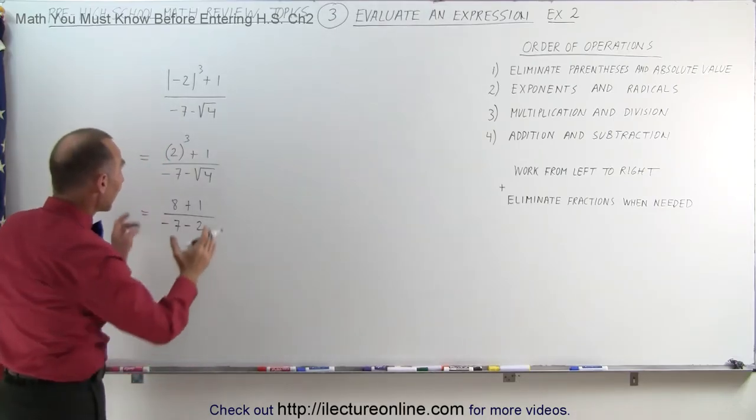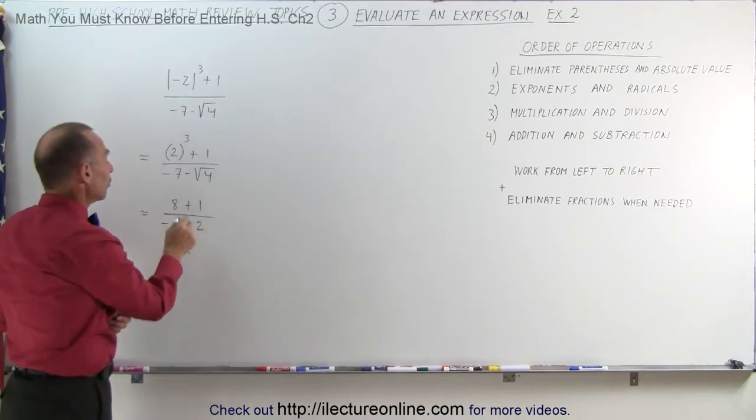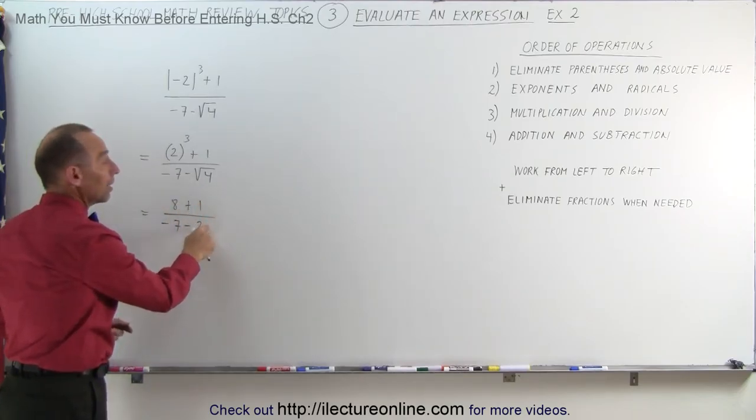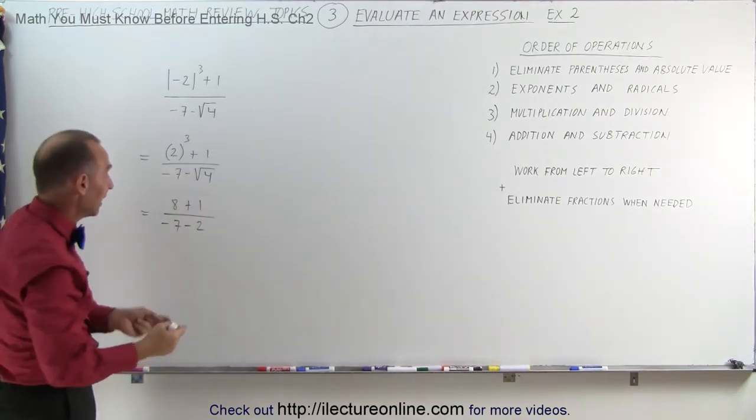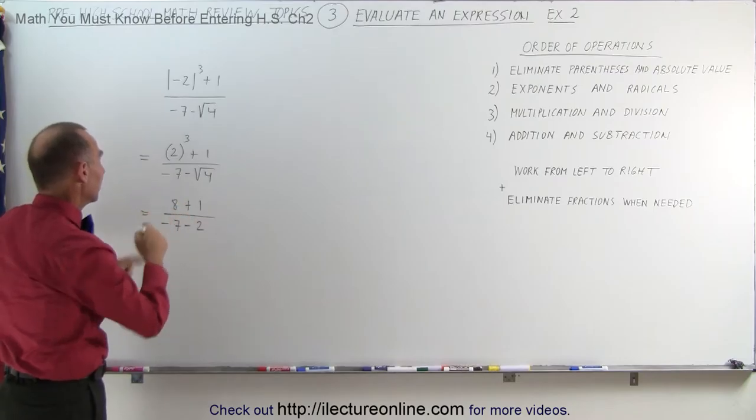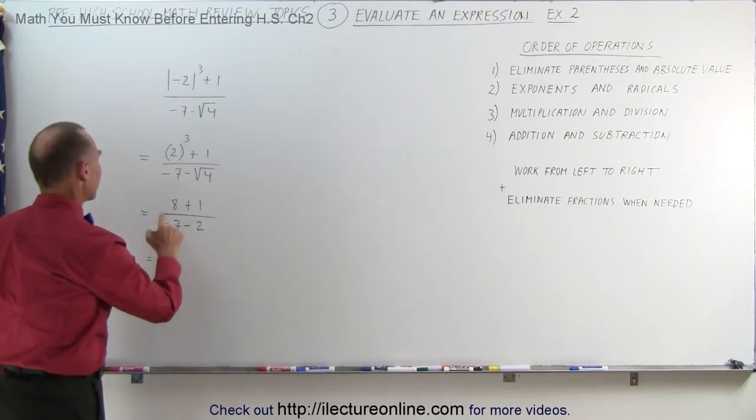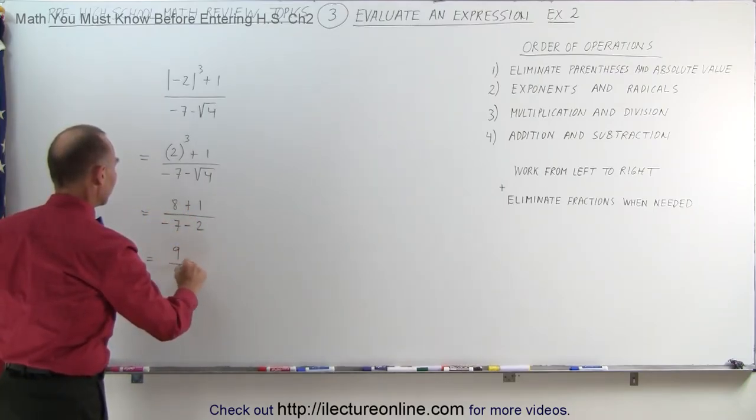Now we can combine what's in the numerator and combine what's in the denominator. Notice it's the numerator divided by the denominator, but before I can do that division, I have to simplify both the numerator and the denominator. So this can now be written as 8 plus 1, which is 9, divided by minus 7, minus 2, which is a minus 9.